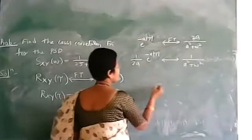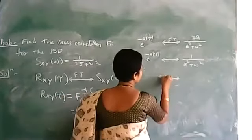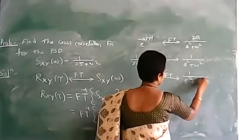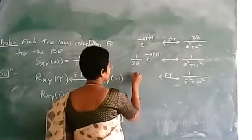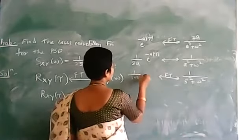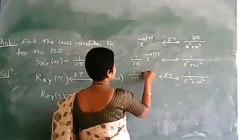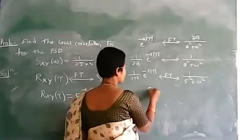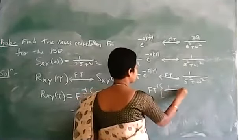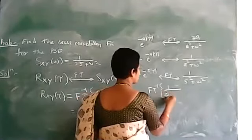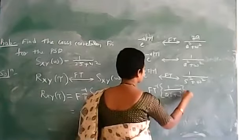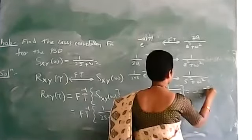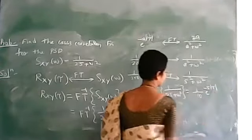From this relation, we have 1 by 5 squared plus omega squared, i.e., 25 plus omega squared. So it is 1 by 2 times 5, times e to the power of minus 5 mod tau. Therefore, the inverse Fourier transform of 1 by 25 plus omega squared is 1 by 10 times e to the power of minus 5 mod tau.